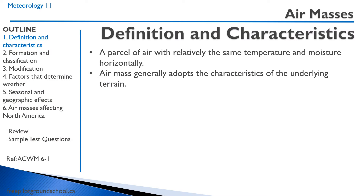The definition of an air mass is a parcel of air with relatively the same temperature and moisture horizontally. An air mass generally adopts the characteristics of the underlying terrain. When we talk about relatively same temperature and moisture, there could be quite a big spread. If one area really should have the same temperature and moisture as another area, but it's actually changed over a given distance or a short distance, that would be a different air mass. And at that interface, we call that a front.